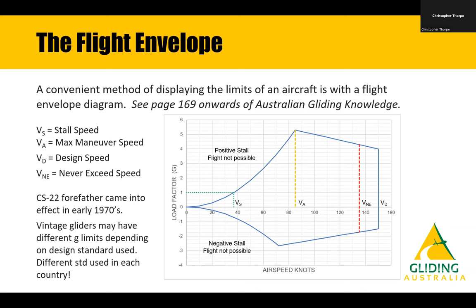Once you exceed VNE, you're into test pilot school. VA is the maximum manoeuvre speed, defined as the point at which the positive stall line meets 5.3g. This speed represents the maximum speed at which you can apply full deflection controls, after which you are limited to one-third control deflections. It is important to remember that air loads are V-squared, so as you increase airspeed by 10%, the air loads experienced by the controls and the rest of the airplane will be approximately 20–21% greater.